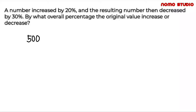So now let's solve. A number increased by 20%, meaning 500 plus 20%. That would be equal to 600.